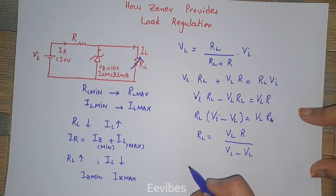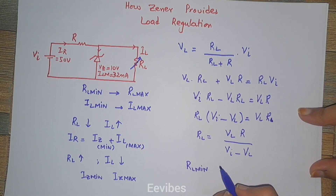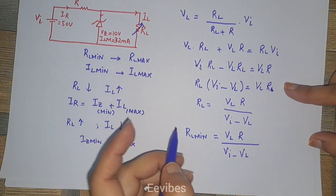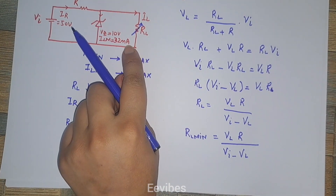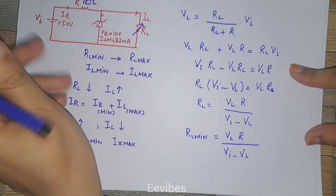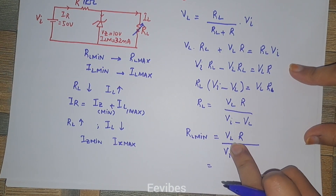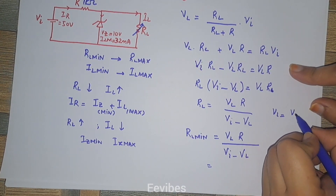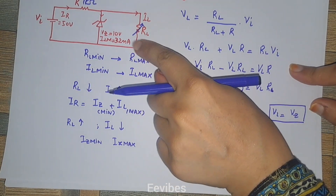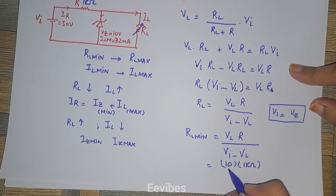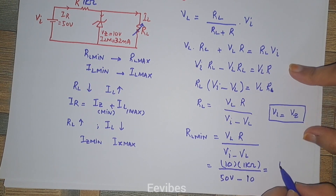This formula gives the value of the load resistance. For the minimum value, we use RL_min = (V_L × R) / (V_i − V_L). Given values: R = 1 kΩ, V_in = 50 V, and V_L = V_Z because the Zener is connected in parallel and maintains constant voltage across its terminals. So V_Z = 10 V, and we substitute: RL_min = (10 × 1 kΩ) / (50 − 10).